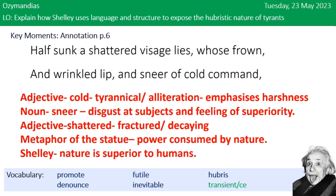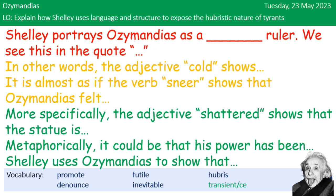Make sure you've got a picture of those notes. What I want you to do then is use the notes you've just made to write out this paragraph. 'Shelley portrays Ozymandias as a [descriptive word] ruler' — use one of your descriptive words from the last slide. Then include the quote and explain how the adjective 'cold' shows this, using the sentence starters provided.